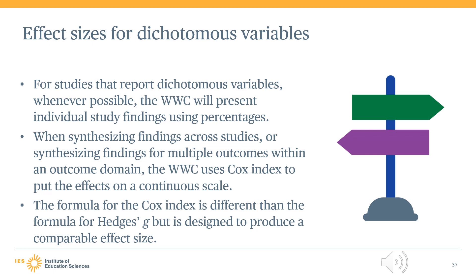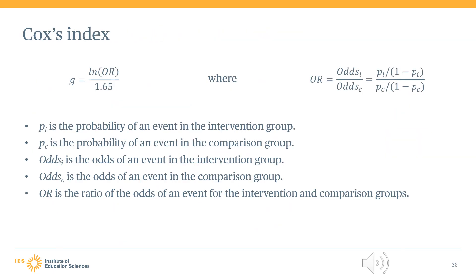Cox's index is designed to produce an effect size measure that is comparable to Hedges G. The formula includes the natural logarithm function, written as LN, and also includes an intermediary calculation called an odds ratio, written as OR. Without going into too much technical detail, Cox's index applies the natural logarithm to the odds ratio, indexing the ratio of the odds of an event in the intervention and comparison groups.